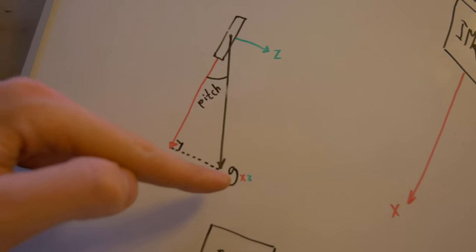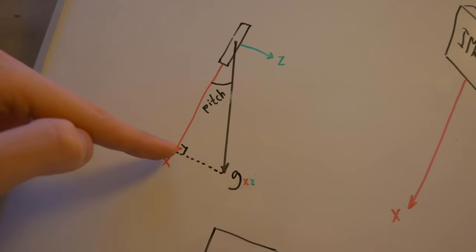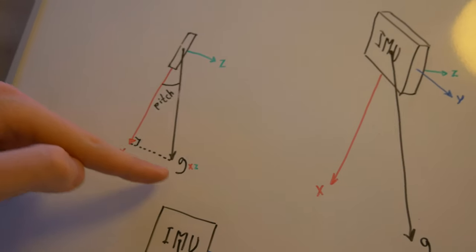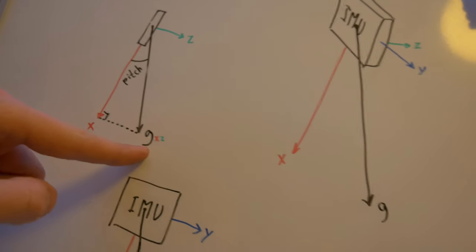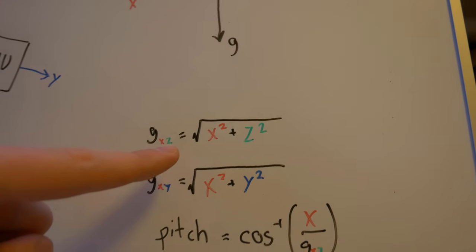As you can see, it's a triangle and this is the angle. Let's first calculate the gravity vector. It's done using Pythagoras theorem.